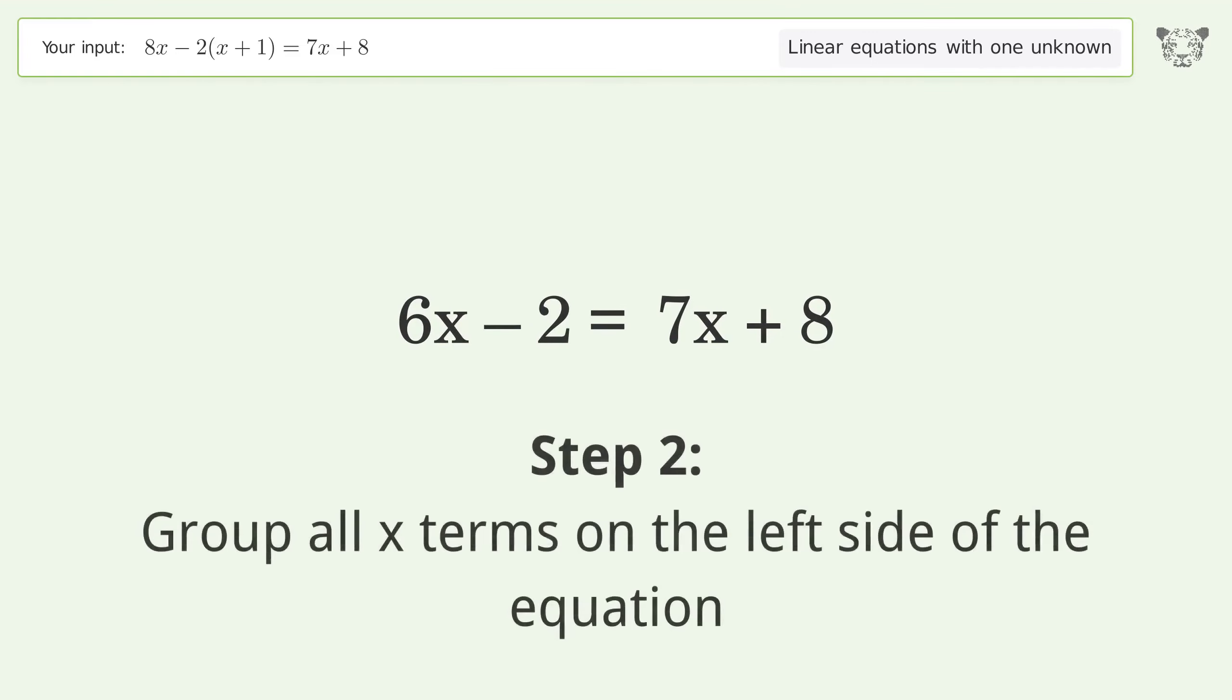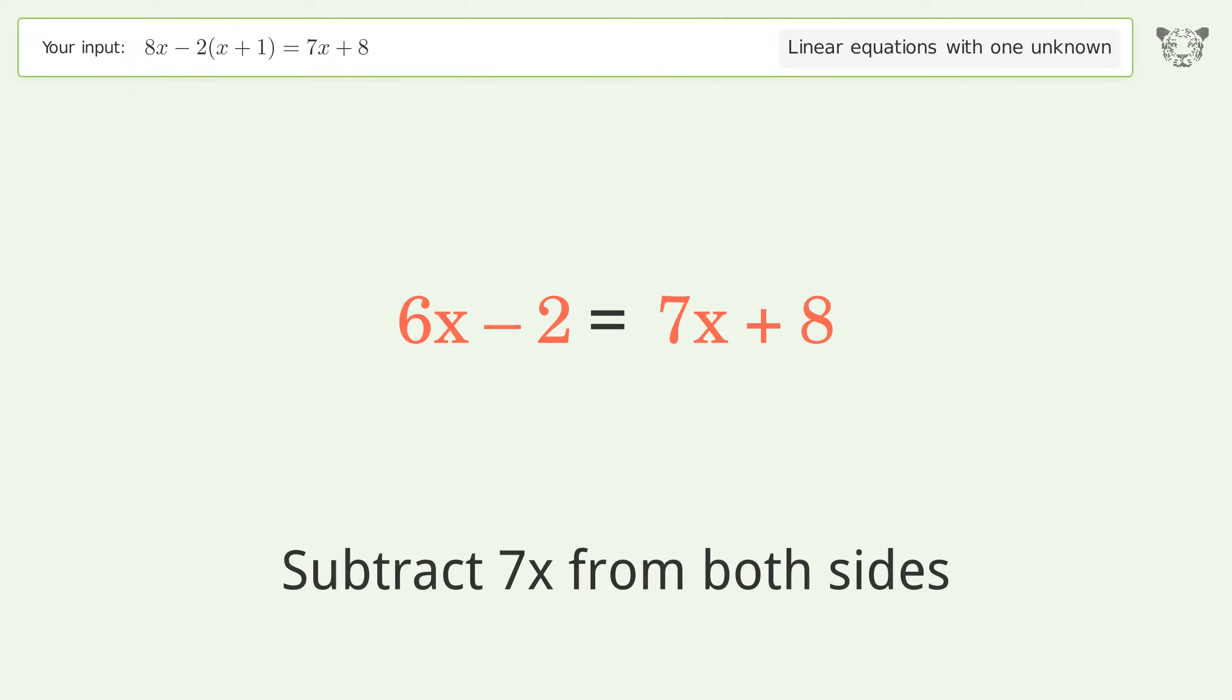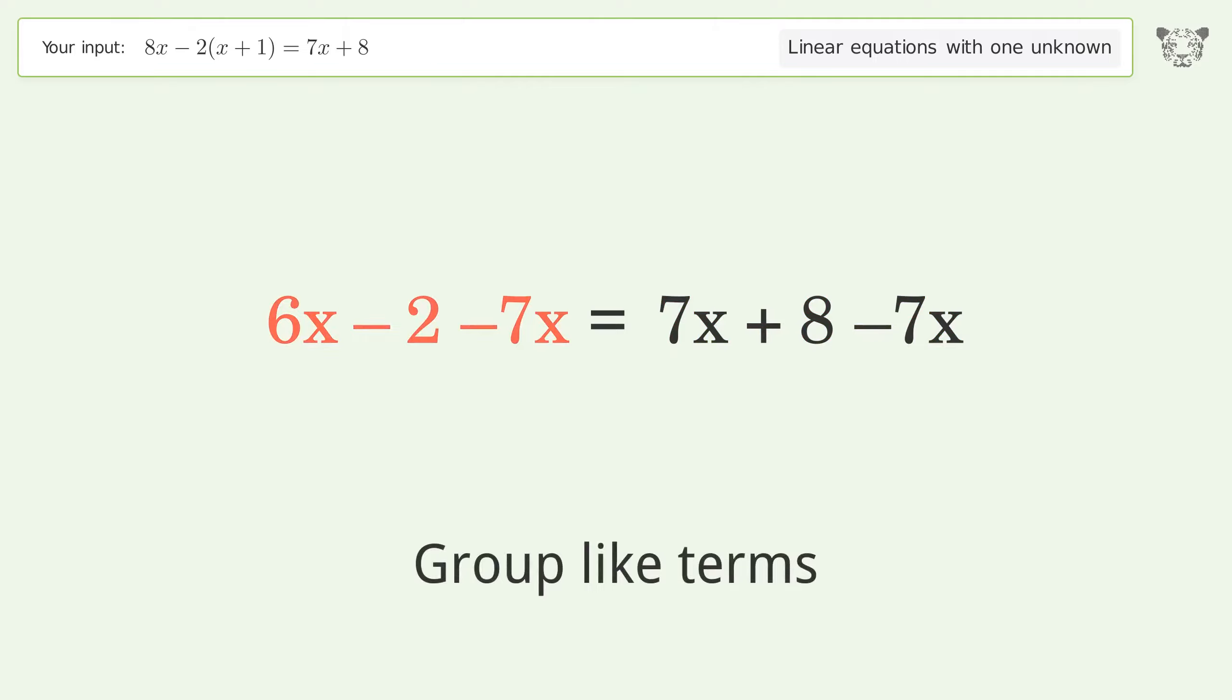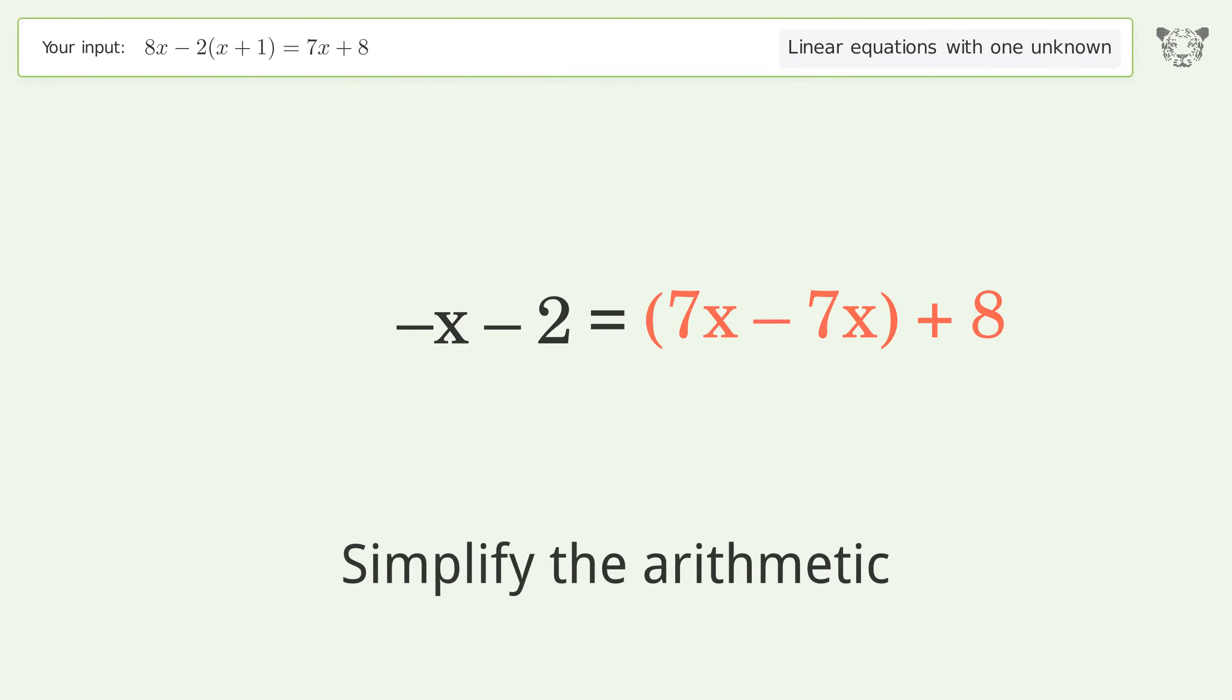Group all x terms on the left side of the equation. Subtract 7x from both sides. Group like terms. Simplify the arithmetic. Group like terms. Simplify the arithmetic.